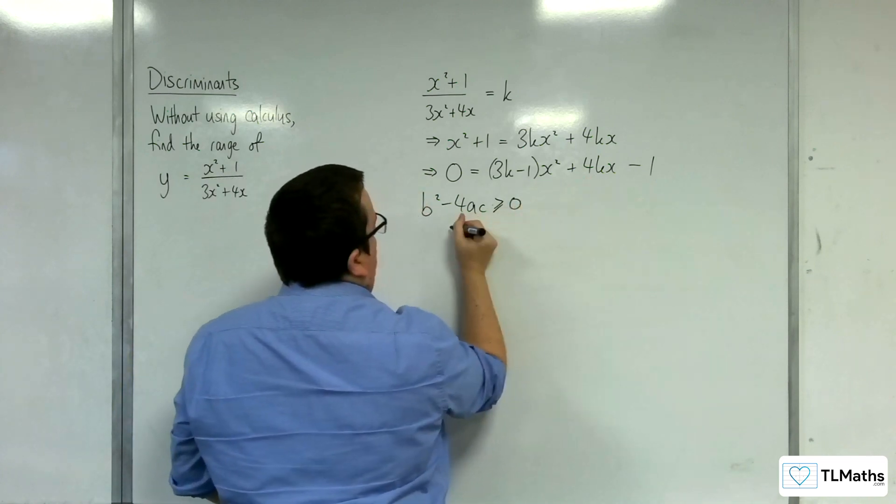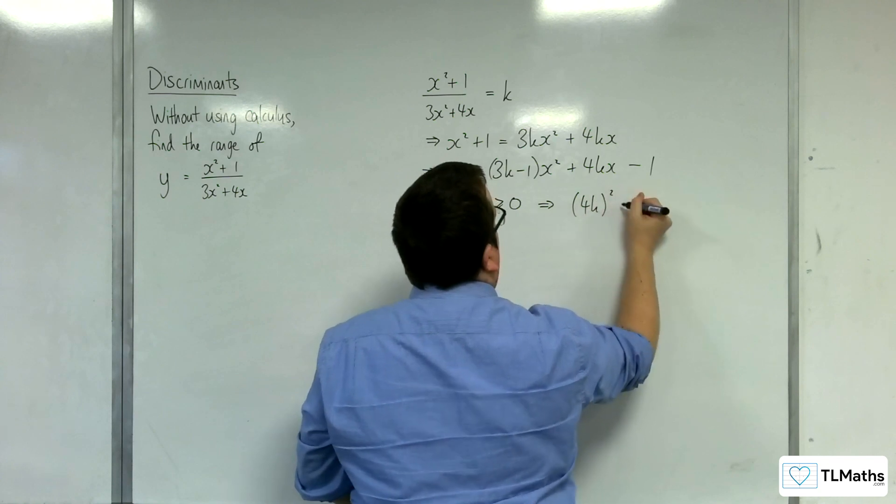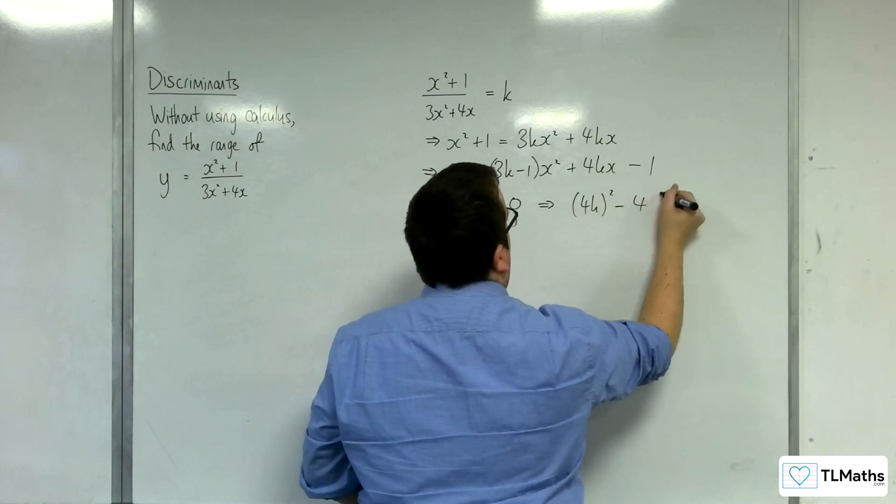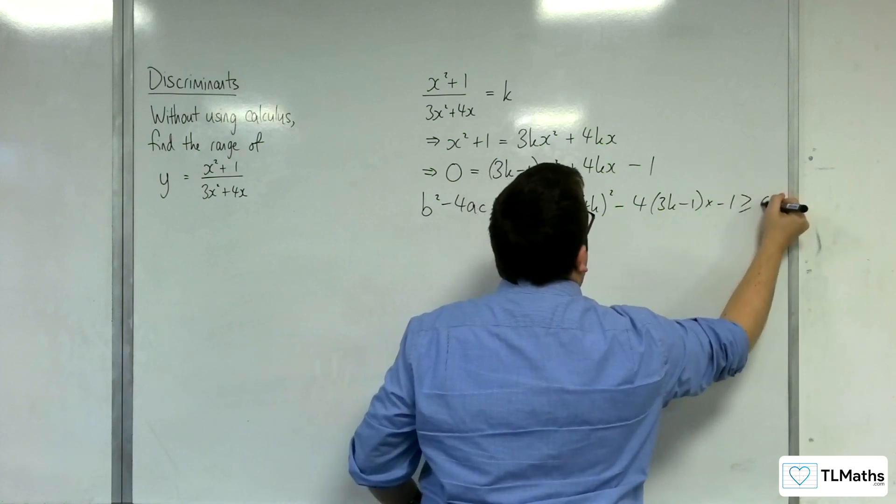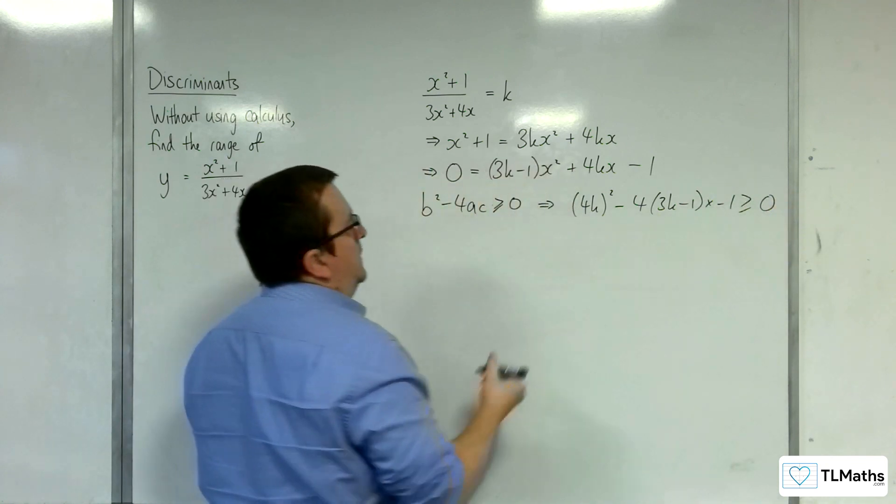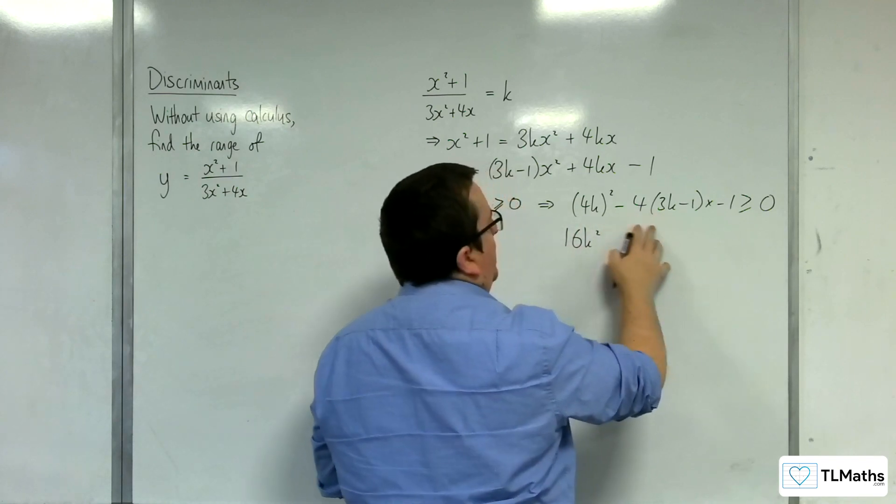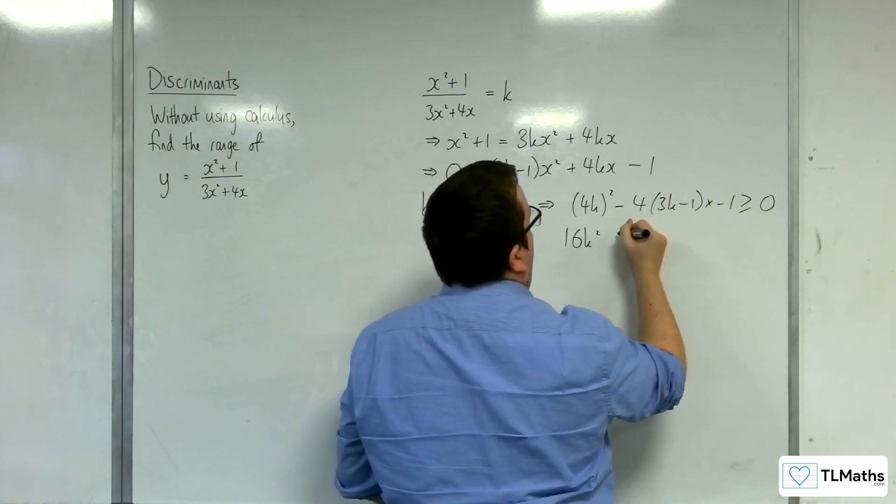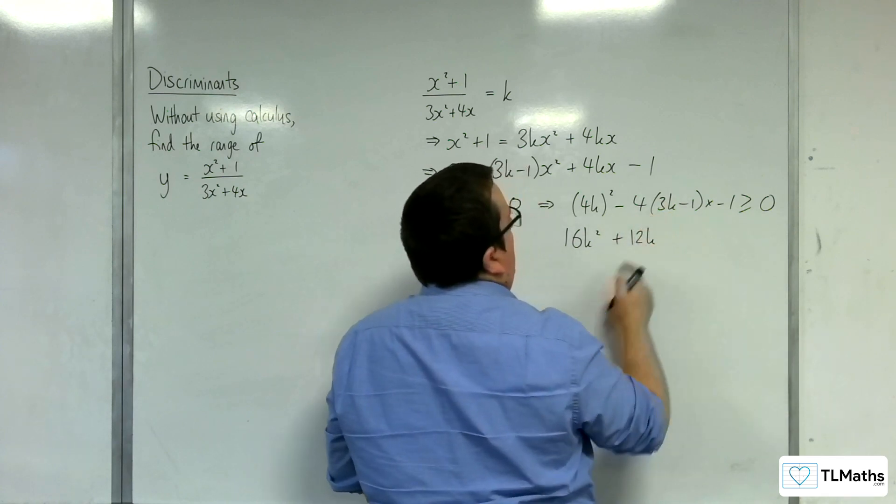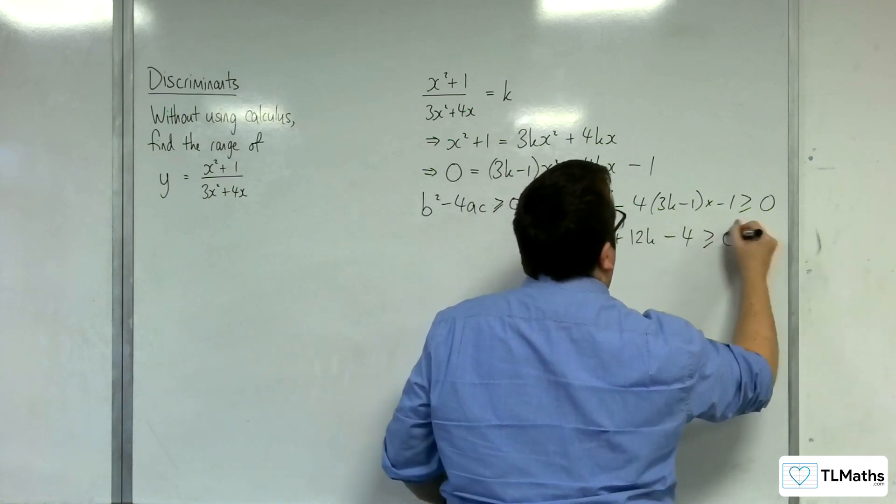So we would have 4k squared take away 4 lots of a times by c. And that's got to be greater than or equal to 0. So that's 16k squared. Now, multiplying this through, we've got minus 4 times minus 1, which is plus 4. So we'll have plus 12k. And then plus 4 times minus 1 will be minus 4. And that's greater than or equal to 0.